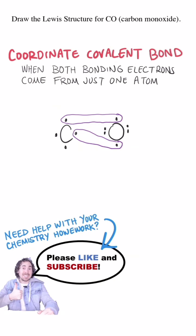In this case, a coordinate covalent bond will form. This is where the shared bonding pair of electrons will come from just one of the atoms.